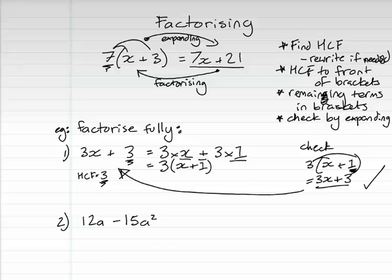Next one. 12a minus 15a squared. We have to get the highest common factor. That means all numbers or pronumerals or powers that could possibly go into both terms. So we look at the coefficients. We've got 12 and negative 15. 3 goes into both of those. a and a squared. a goes into both of them. So our highest common factor is 3a, not just 3.